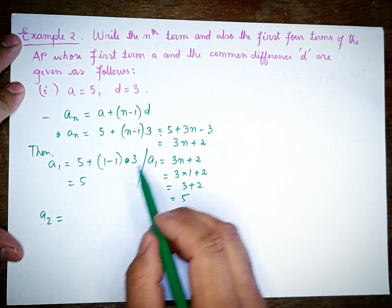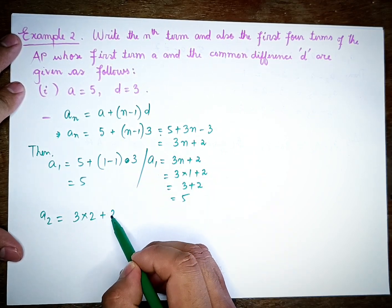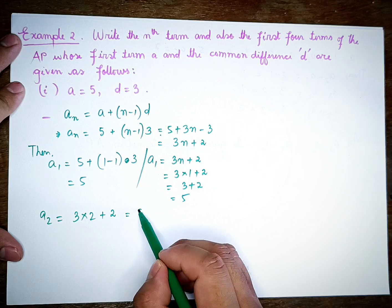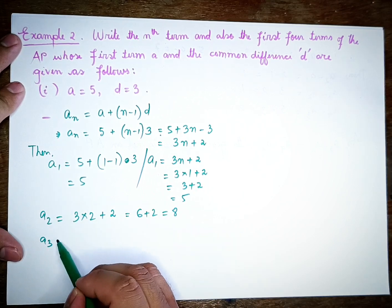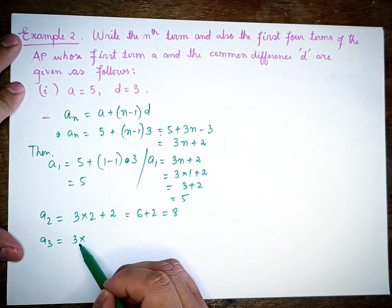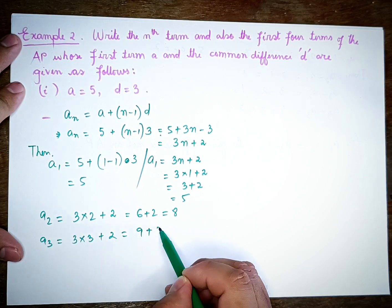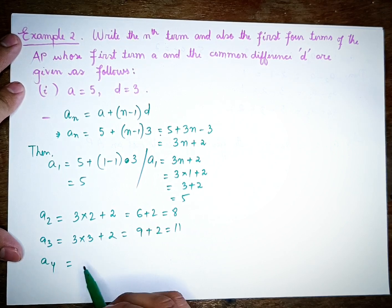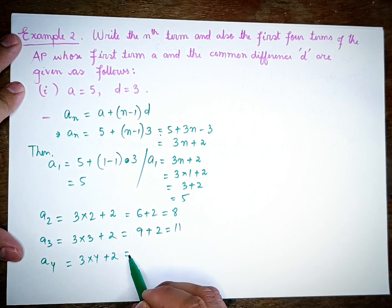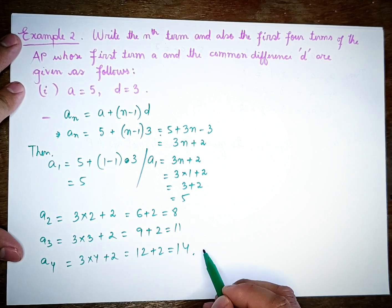Next, A2 value: 3 into 2 plus 2 equals 8. Next, A3 value: 3 into 3 plus 2 equals 11. Next, A4 value: 3 into 4 plus 2 equals 14.